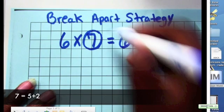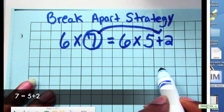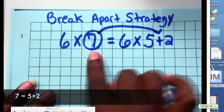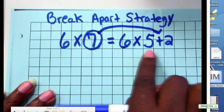So this seven was broken apart into five plus two. Six times seven is equal or equivalent to six times five plus two.